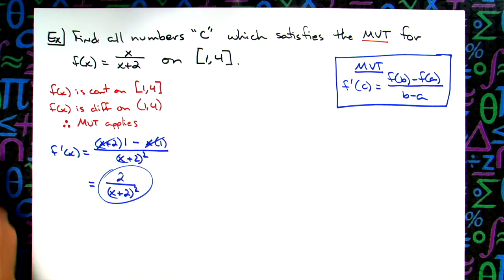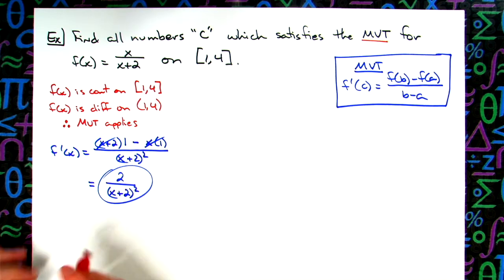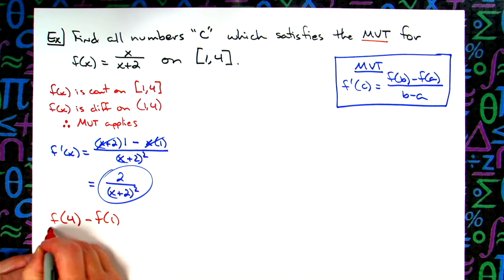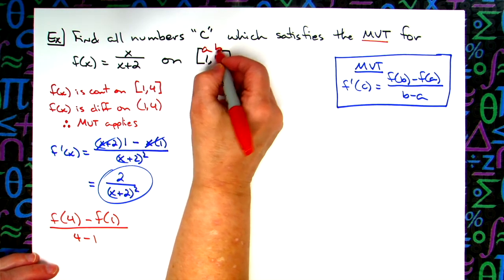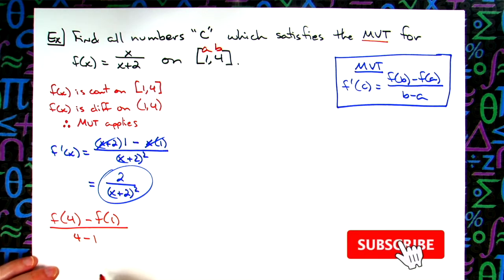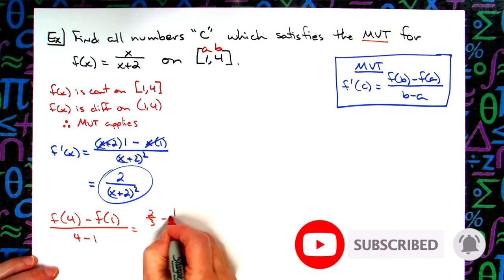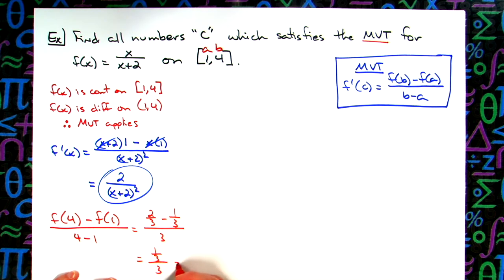Next thing then that we need to do is calculate that average rate of change on this interval. So I'm going to be looking at f(4) - f(1), all over 4 - 1. This is my a value, this is my b value. Plugging those in, we're going to have 2/3 minus 1/3, all over 3. Doing a little bit of arithmetic here, I'll have 1/3 over 3, which then just basically gives me 1/9.